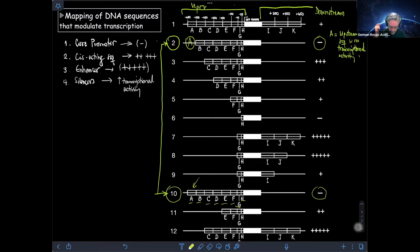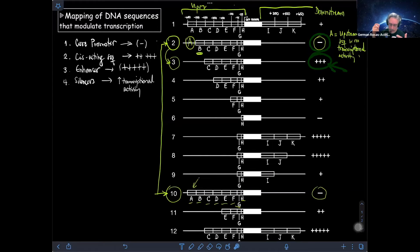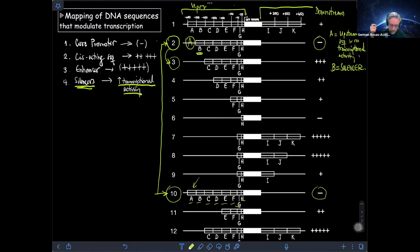Moving forward, comparing construct 2 with construct 3, the only difference is the presence or absence of segment B. In construct 2 you have B; in construct 3 you don't. Eliminating B causes transcription to increase from no activity to three crosses of transcription activity. So eliminating B increases transcription, which means B is a silencer — because when we eliminate a silencer, we increase transcriptional activity.